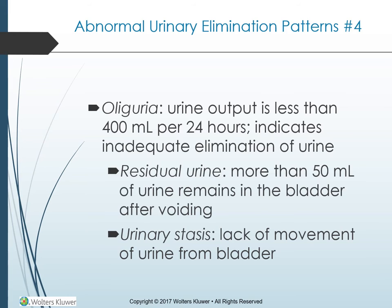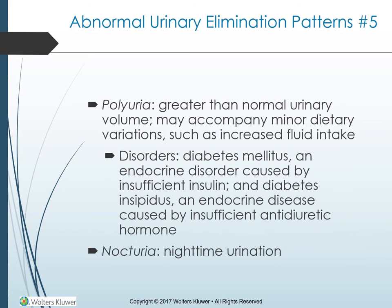Older adults are more likely to have chronic residual urine, increasing the risk for urinary tract infections. Good perineal hygiene — including cleaning from the urinary area back toward the rectal area — is an important preventive intervention. Thorough hand washing by both client and caregiver is necessary. Older adults may benefit from double voiding, in which the person voids and then waits a few minutes to allow any residual urine to be voided, facilitating more complete bladder emptying.